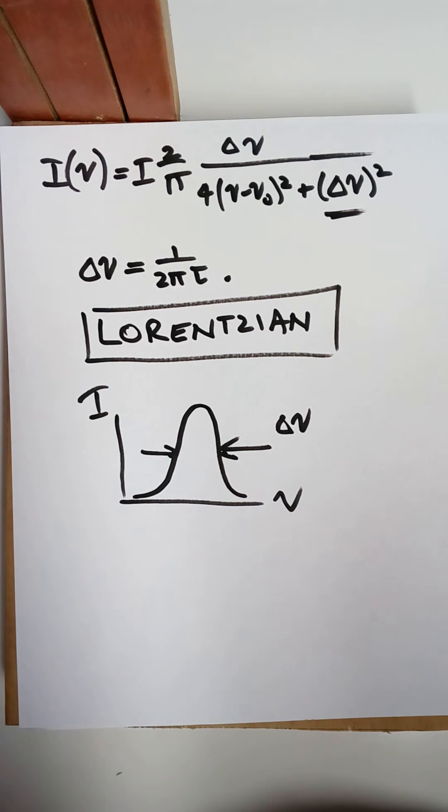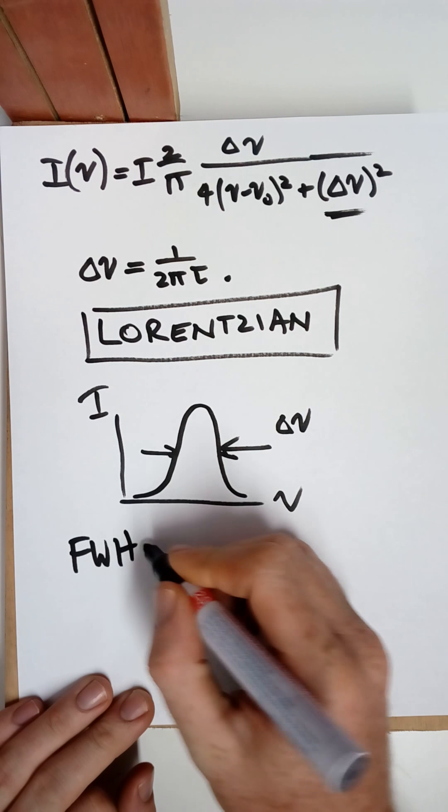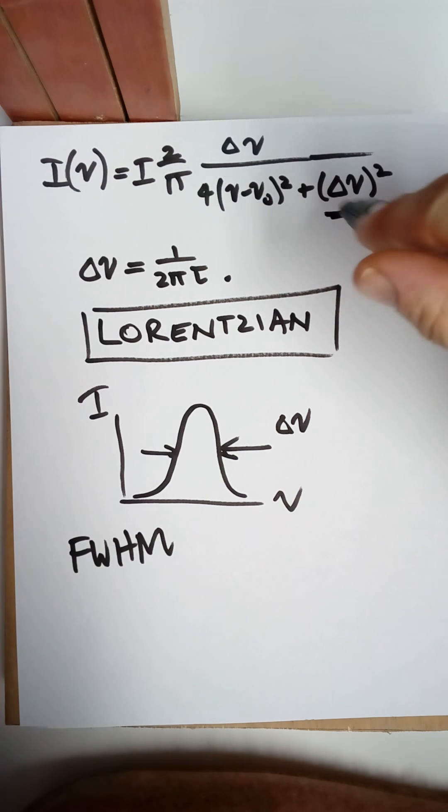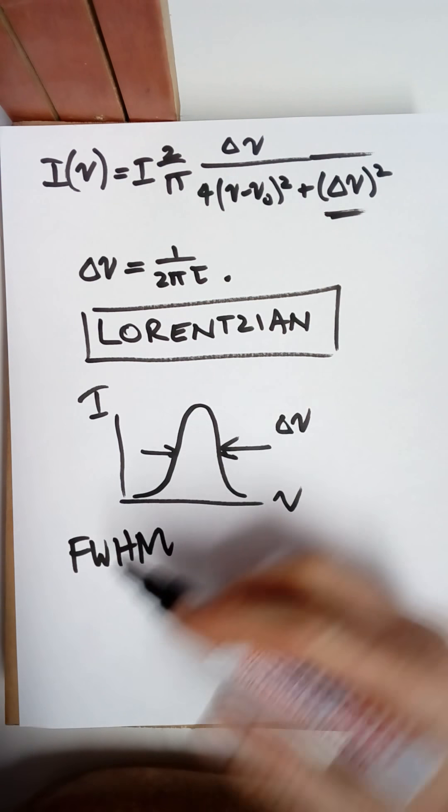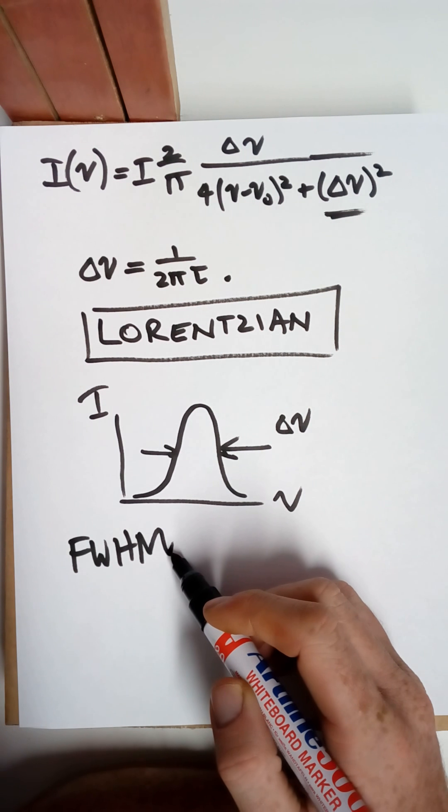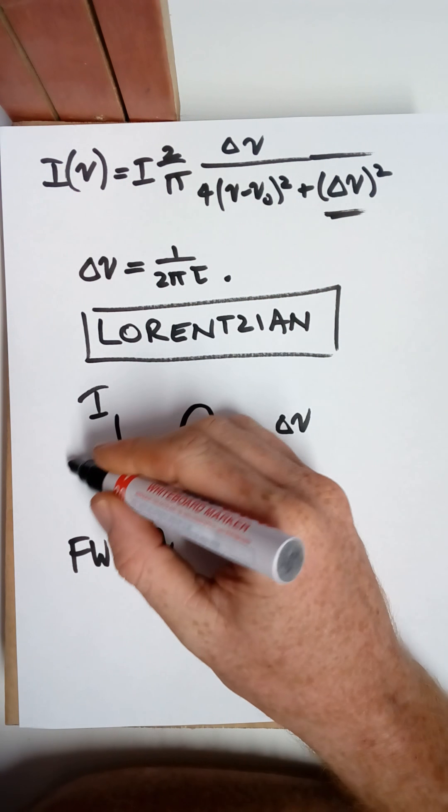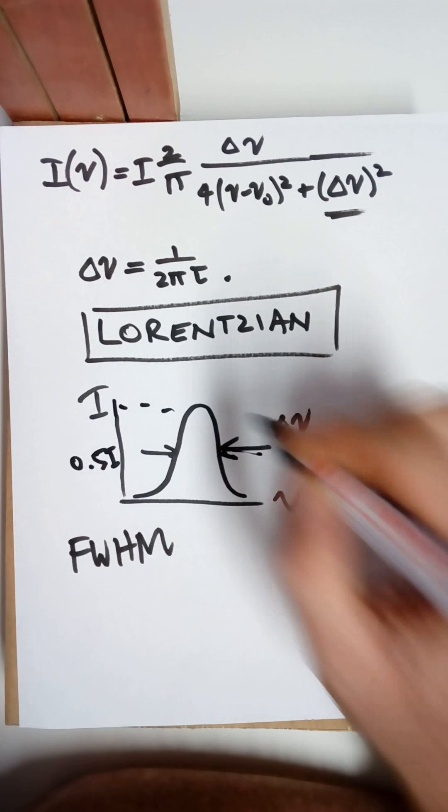And interestingly, line widths are measured by something called full width half maximum, which is used because interestingly, if you try to evaluate the standard deviation of a Lorentzian function, it turns out to be undefined or infinity. So the idea of standard deviations for Lorentzian functions are undefined. So instead they had to improvise and use this idea of full width, half maximum. So it's essentially the width of this profile at half the maximum, so 0.5I, where this is I up here, the maximum intensity.